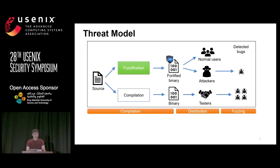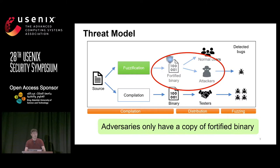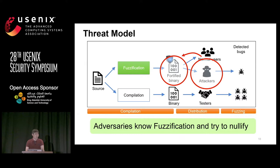For this research, we assumed one realistic scenario. First, the adversary tries to discover bugs by using fuzzing. However, attackers do not have access to the source code or the normally compiled binary — attackers only have a copy of the fortified binary. Finally, the attackers know about the fuzzification technique and try to nullify it for better fuzzing performance.